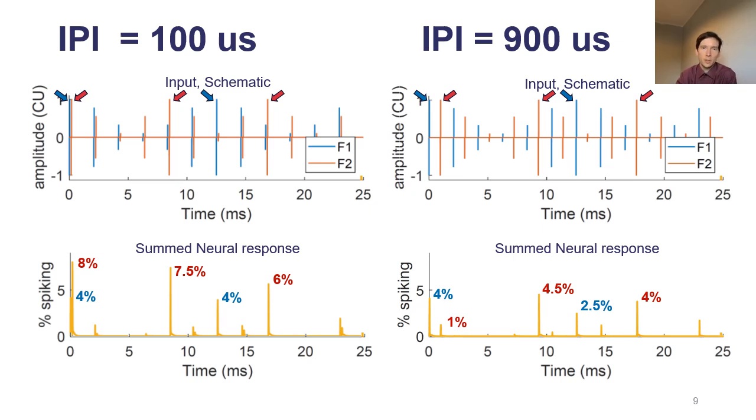This is the same plot on the right, but for the case where the inter-pulse interval is at 900 microseconds. You can see that the red pulses are now shifted away from blue pulses by 900 microseconds.